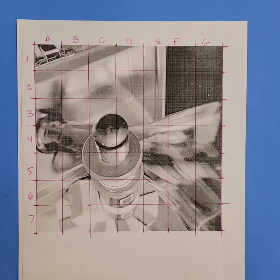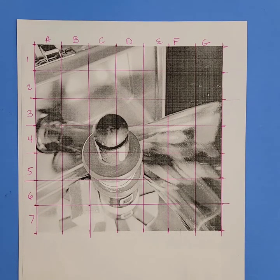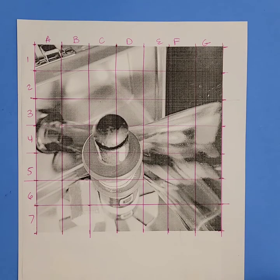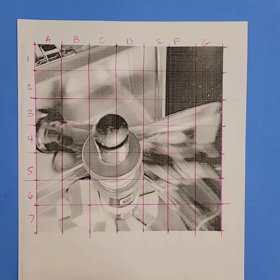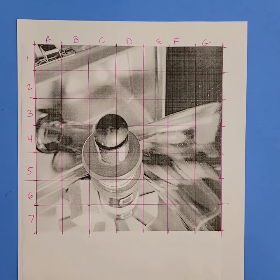So again, this is a one-to-one grid, which means that the grid that I'm going to be placing on my drawing paper is going to be exactly the same. It's going to be seven inches by seven inches, and I'm going to place a one-inch grid on the drawing paper. This is going to transfer the image in the exact proportions and the exact size as the original printout.